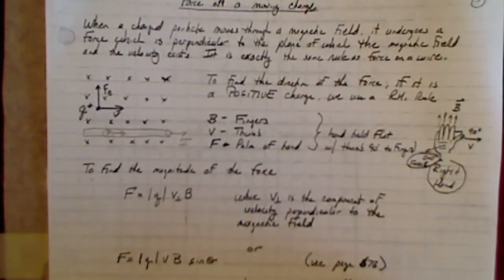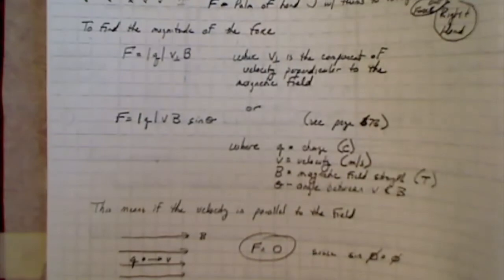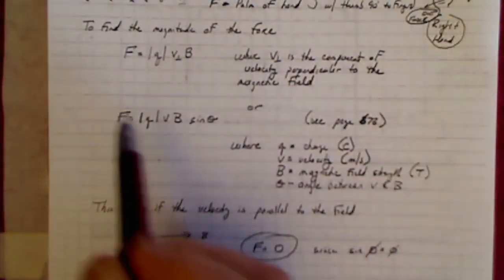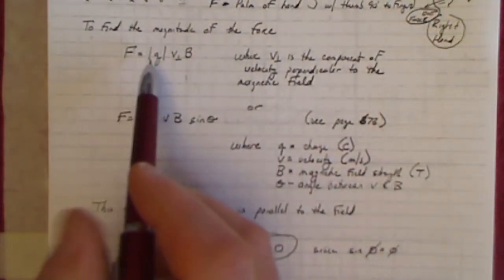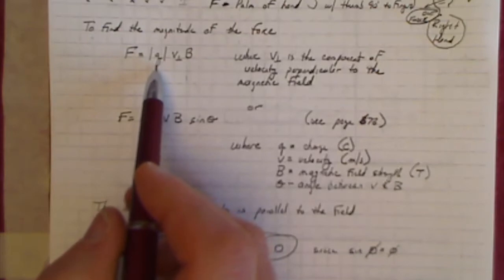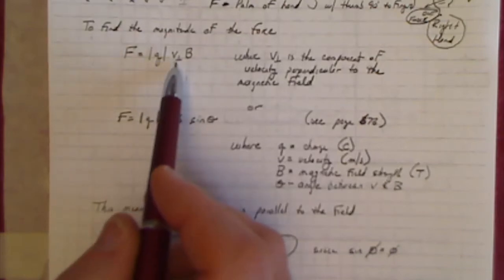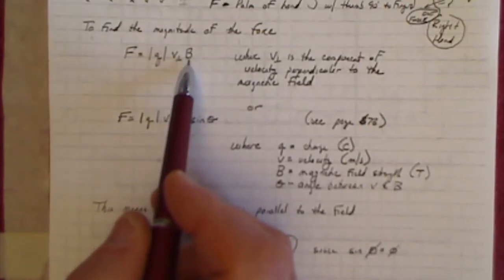To find the magnitude, or how big that force is, it's equal to the absolute value of the charge, multiplied by the component of the velocity perpendicular to the magnetic field, times the strength of the magnetic field.